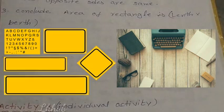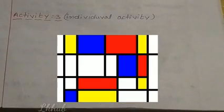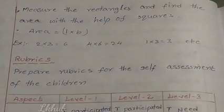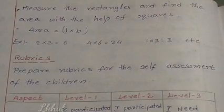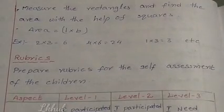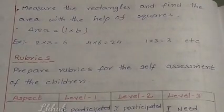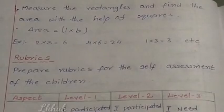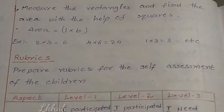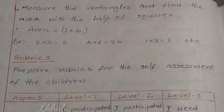Activity 3 is an individual activity. Observe the pictures. Measure the rectangles and find the area with the help of squares. Area is equal to L × B. For example: 2 × 3 = 6, 4 × 6 = 24, 1 × 3 = 3, etc.